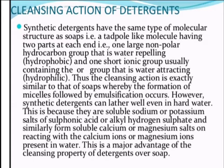Detergents similarly form soluble calcium or magnesium salts when reacting with calcium or magnesium ions present in hard water. This is a major advantage of detergents over soaps. Since detergents have the same two ends — a water-loving head and a water-repelling tail — they can work like soaps but with the added advantage of reacting with calcium and magnesium ions without losing effectiveness.